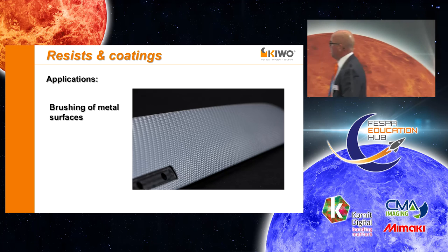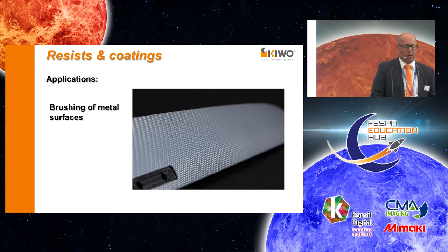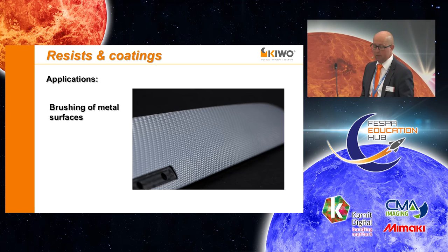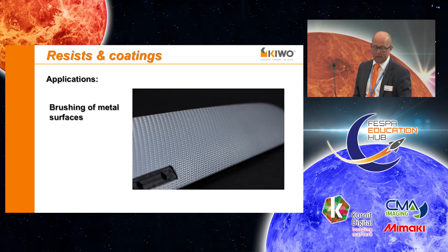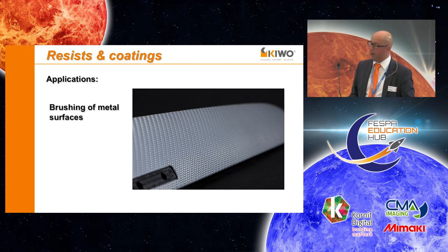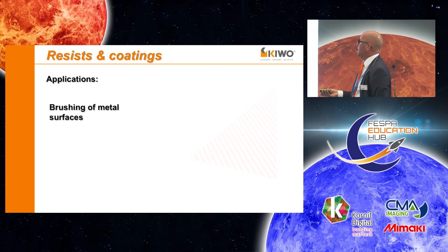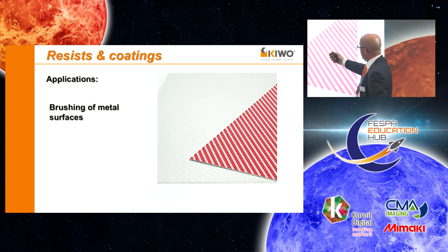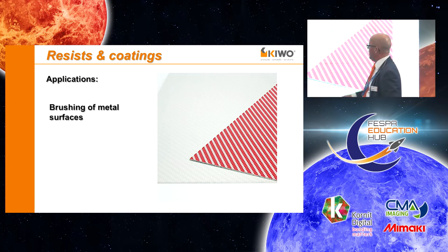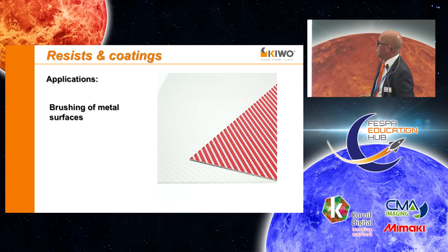My favorite application is brushing — partial brushing of metal surfaces. This is an example of brushed aluminum surfaces for car interiors. The trend goes to designs created by brushing in different angles. To create this pattern, a protective resist on the aluminum can be applied by screen printing, or a fully coated photoresist is imaged by UV light. After brushing, the resist can be stripped by special chemicals. Here you can see the polished aluminum plate covered by the resist, and this is the result after brushing and stripping.